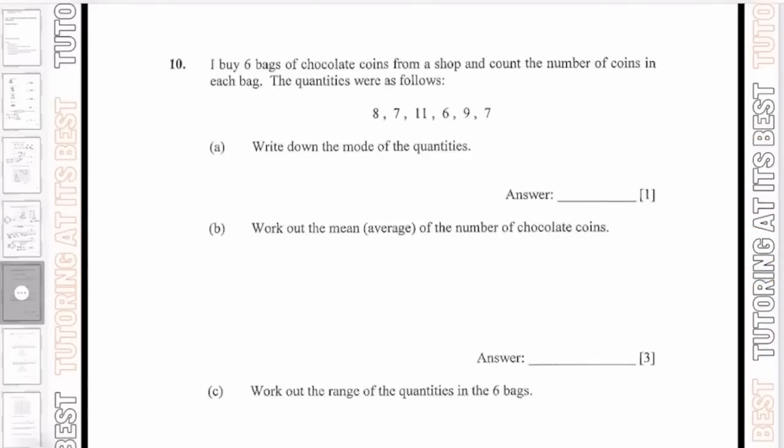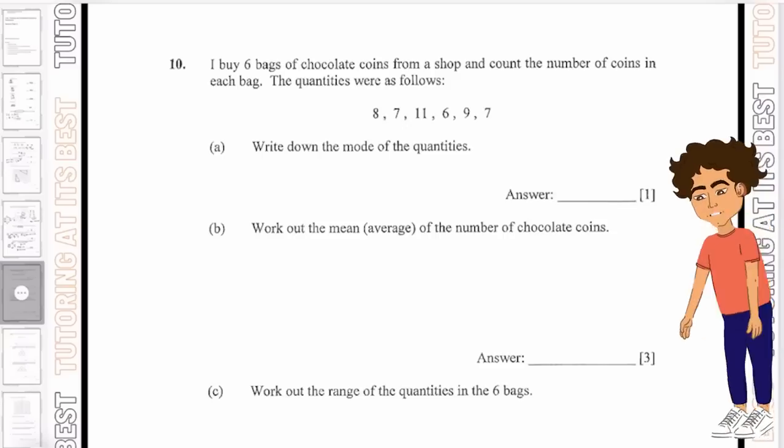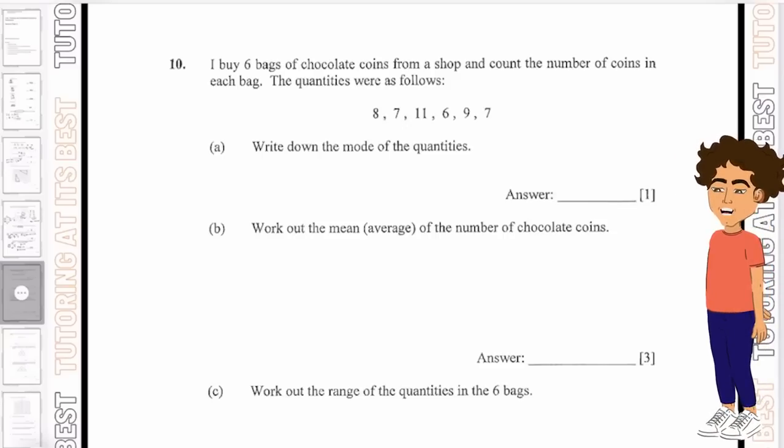I buy six bags of chocolate coins from the shop and count the number of coins in each bag. The quantities were as follows: 8, 7, 11, 6, 9 and 7.